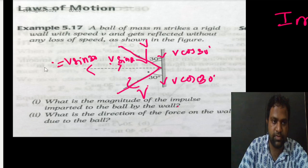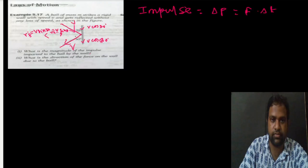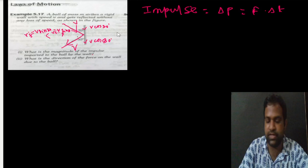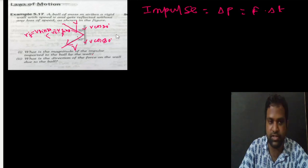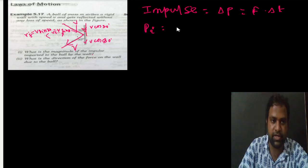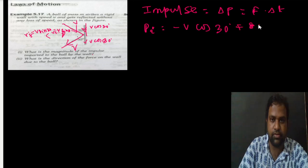V sin 30 is along the y-axis and V cos 30 is along the positive x-axis for the initial velocity. The initial momentum can be written as V cos 30 going downwards towards the negative direction, so minus V cos 30 i-cap, plus V sin 30 j-cap.